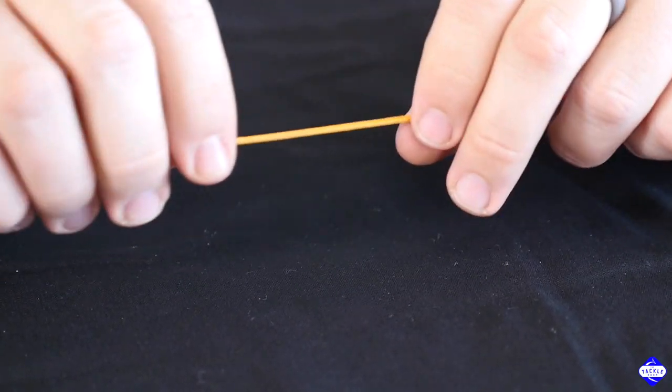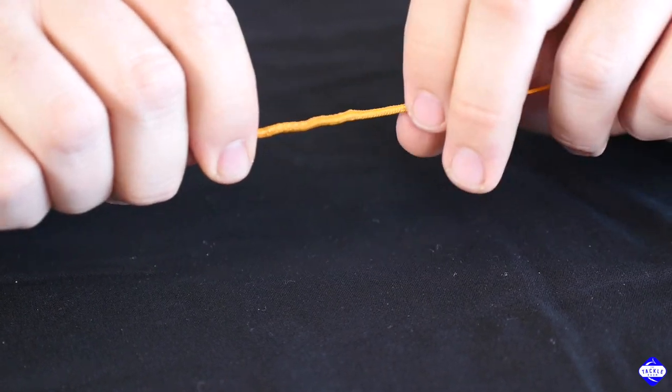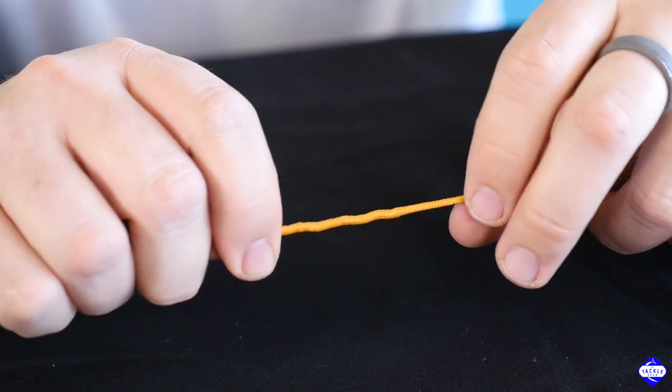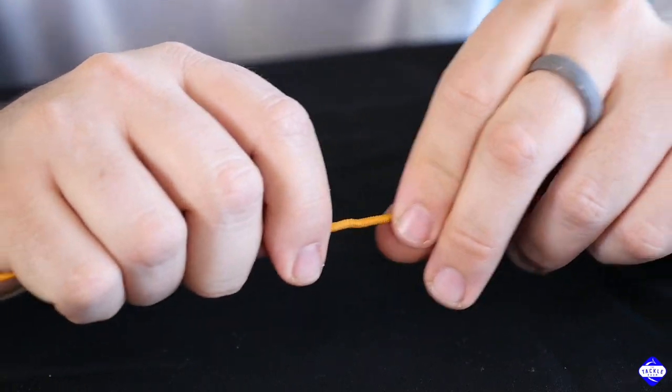I typically like to run the braid or run the mono inside the braid about nine feet. It's a good safe distance. You don't have to worry about anything pulling out.